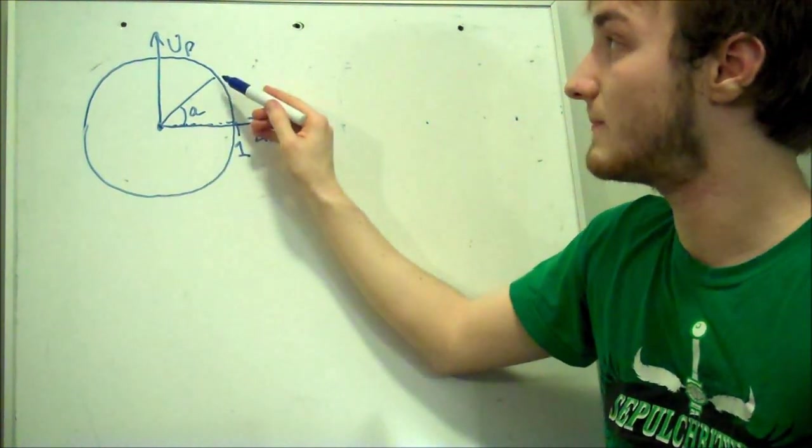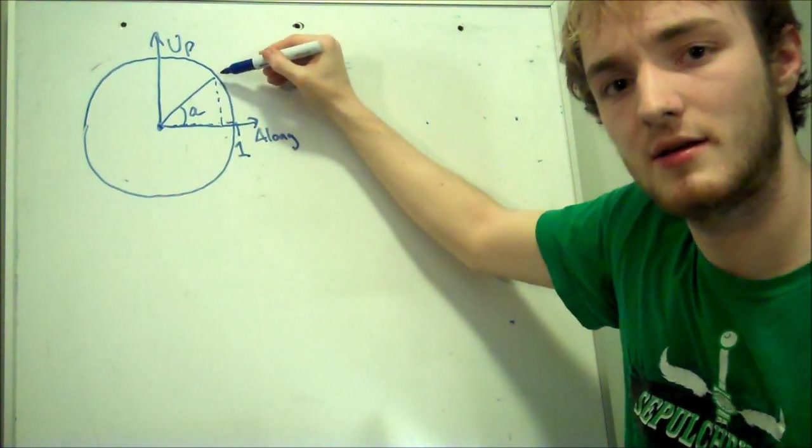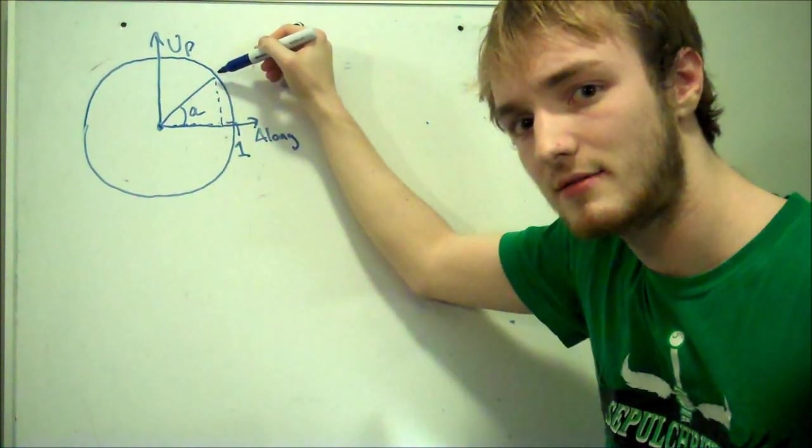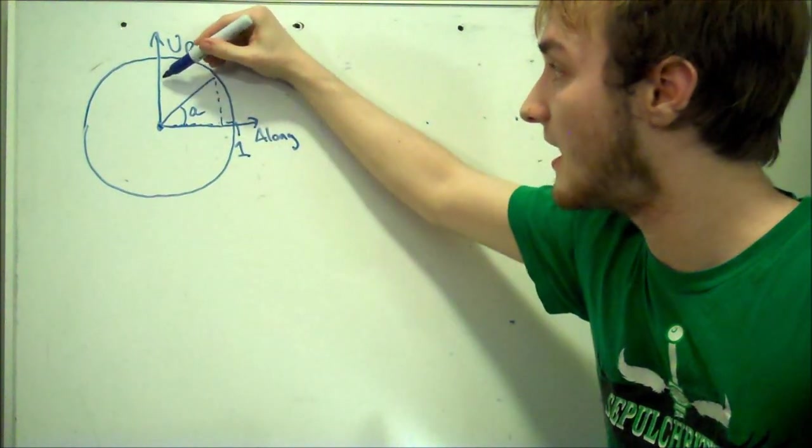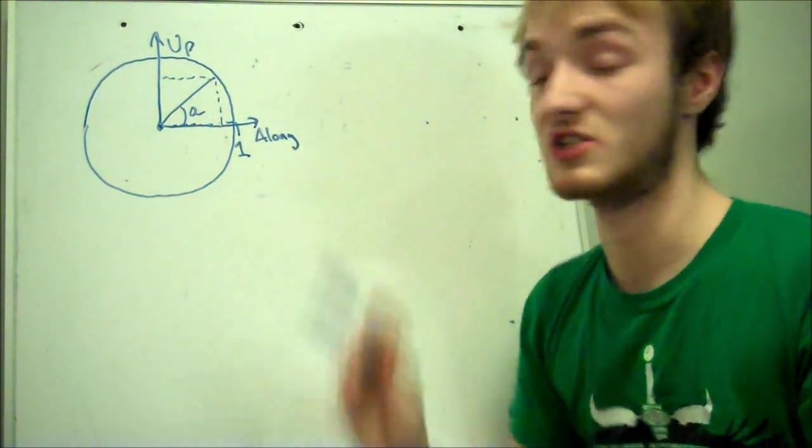If we draw another one here, how far up is the tip of this line when it touches there? And how far along is the tip of this line of length 1 when it touches the circle?